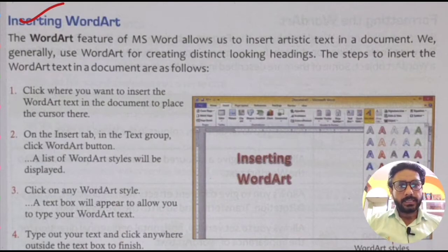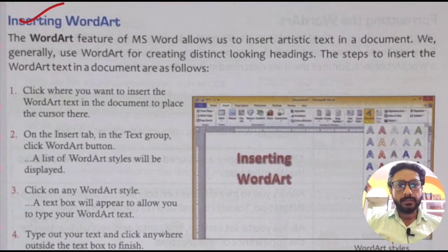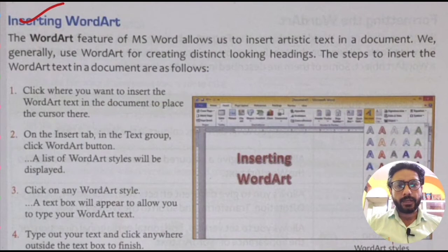The steps to insert Word Art text in a document are as follows. First, click where you want to insert the Word Art text in the document to place the cursor there. Then, on the Insert tab in the Text group, click the Word Art button.